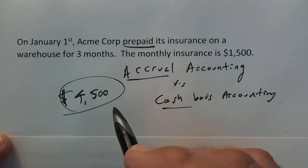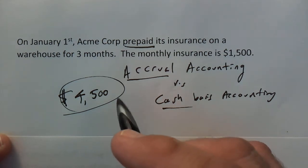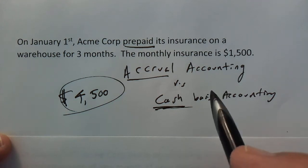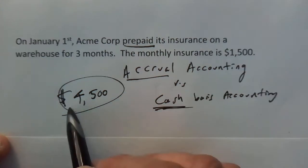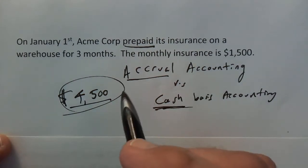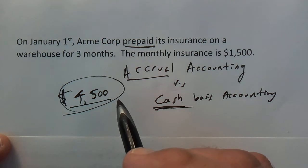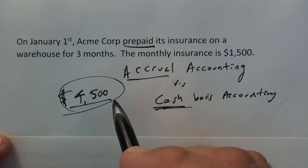Now, most of us individuals treat our accounting more on a cash basis. So you would think that the insurance expense is $4,500 because I just wrote a check for $4,500.